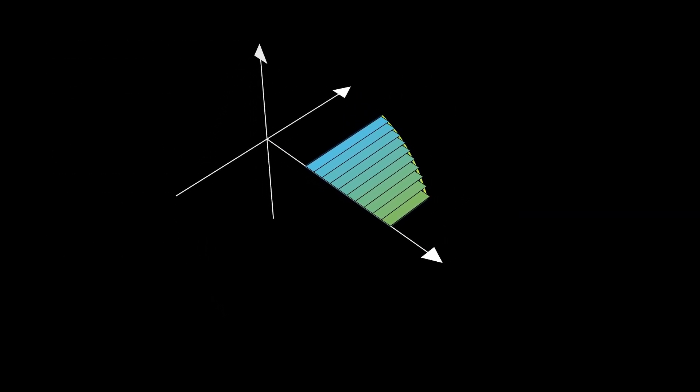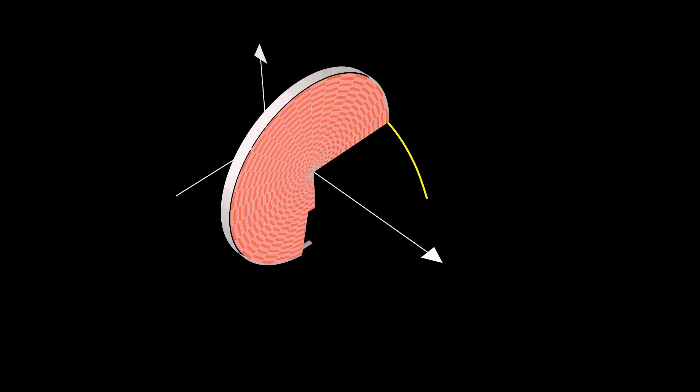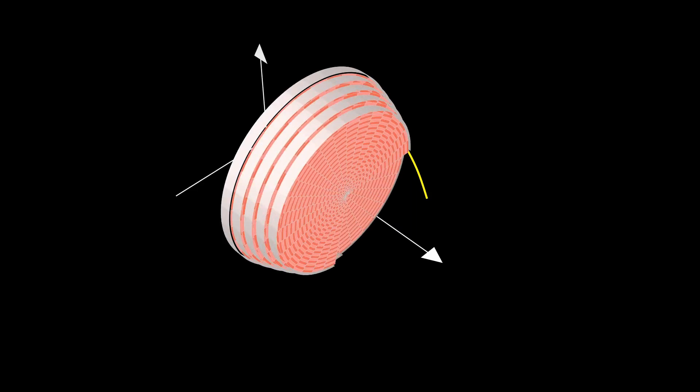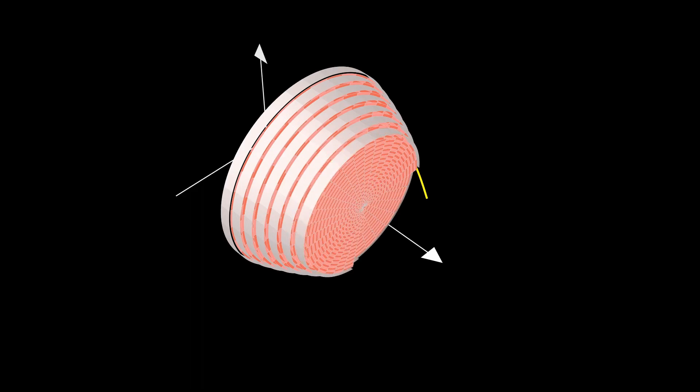Let's now take all the n approximating rectangles of our two-dimensional region and rotate them about the x-axis to generate approximating disks, or thin cylinders, for our solid of revolution.